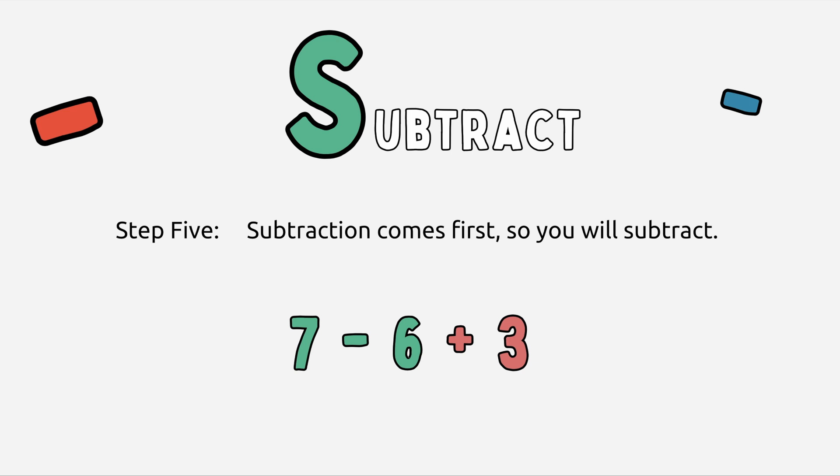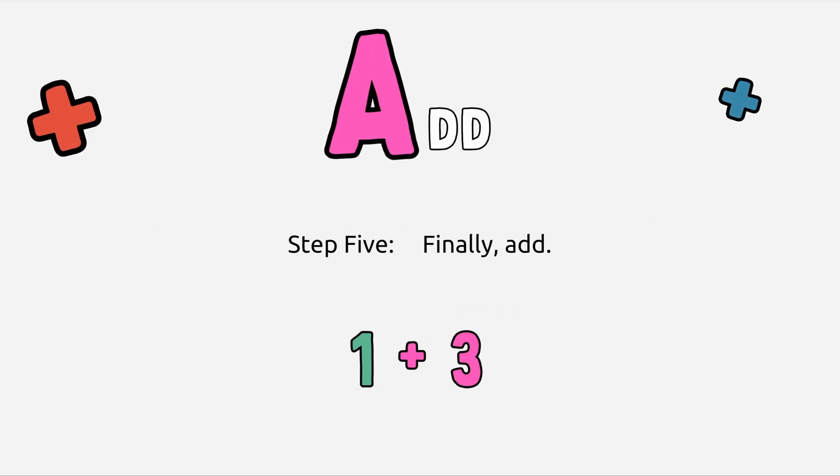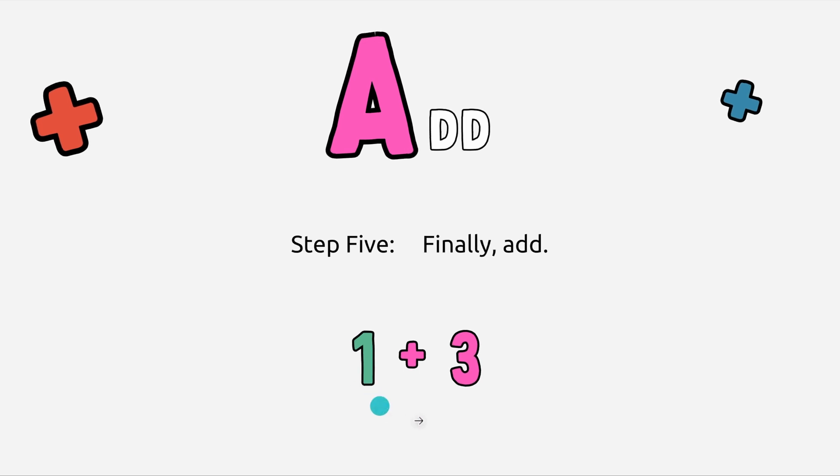And now I'm ready to subtract. Again, I know in the order of PEMDAS adding comes first, but here subtraction comes first in our expression, and subtraction and addition can switch around depending on that. So we're going to subtract first. 7 minus 6 gives me 1, and finally I have to add. 1 plus 3 is 4.